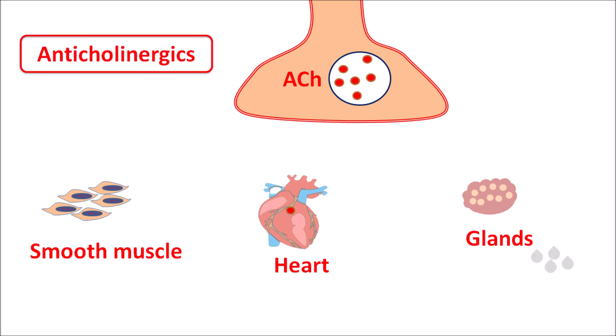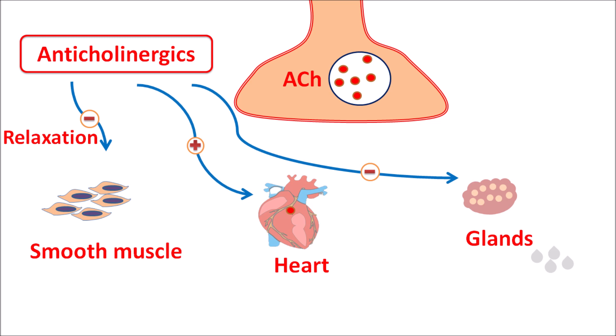Anticholinergics are drugs that block the actions of acetylcholine at all three target organs. They produce relaxation of smooth muscle — except at vascular smooth muscle, which is mainly controlled by the adrenergic system and nitric oxide. They also block acetylcholine's action on the heart, stimulating the cardiac system, and inhibit glandular secretion, causing drying of secretions.